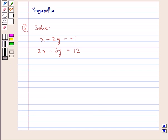Hello and welcome to the session. In this session we discuss the following question which says, solve x plus 2y is equal to minus 1 and 2x minus 3y is equal to 12.